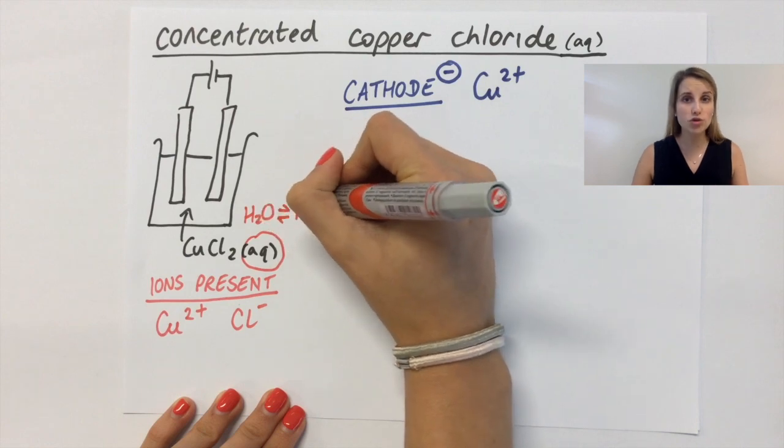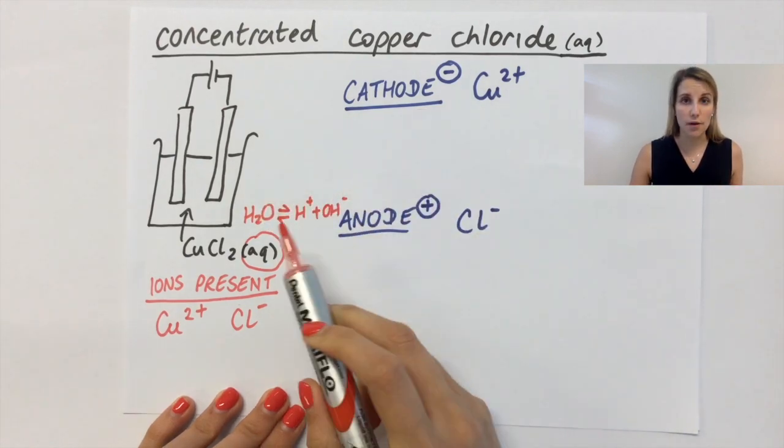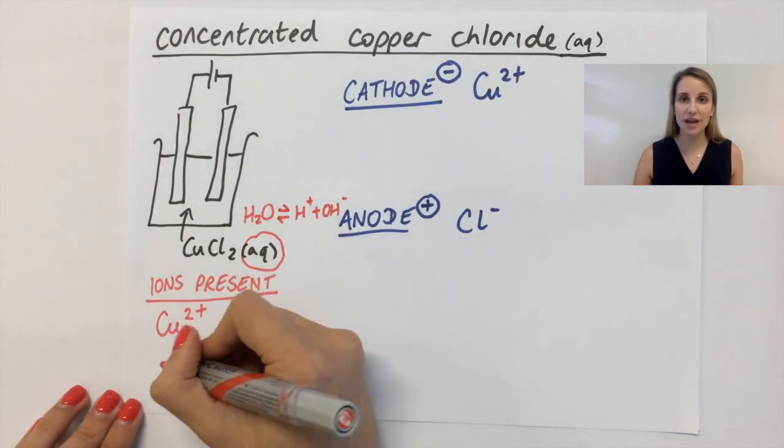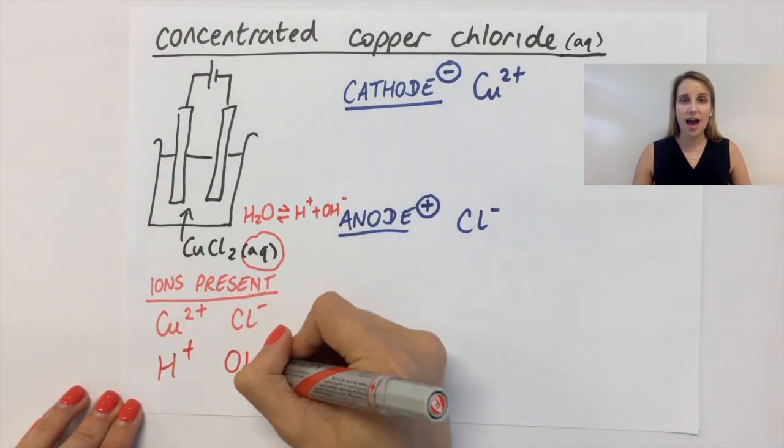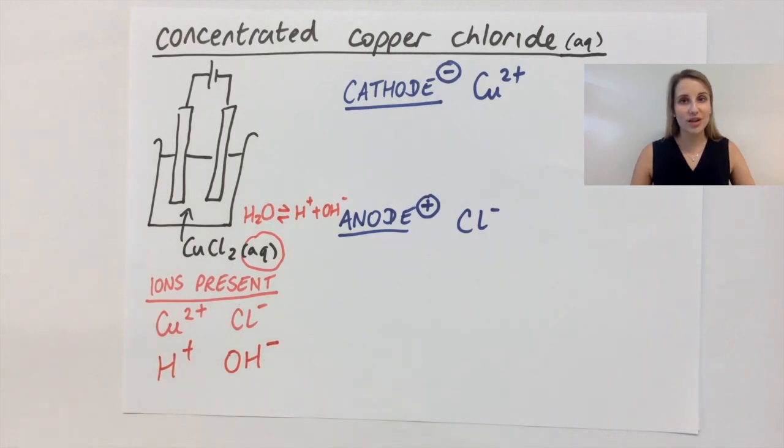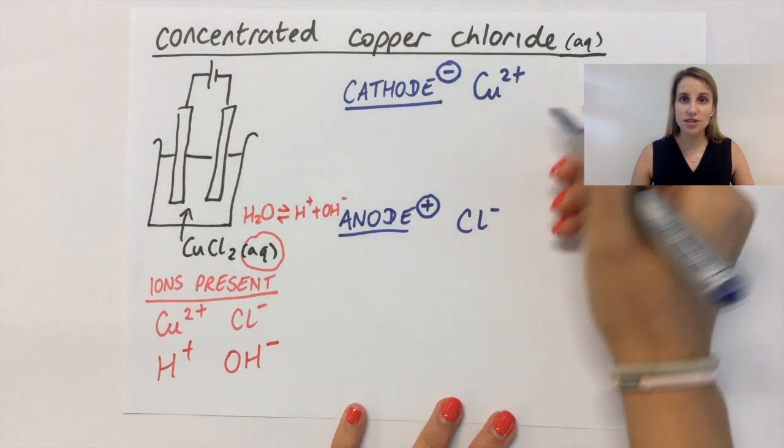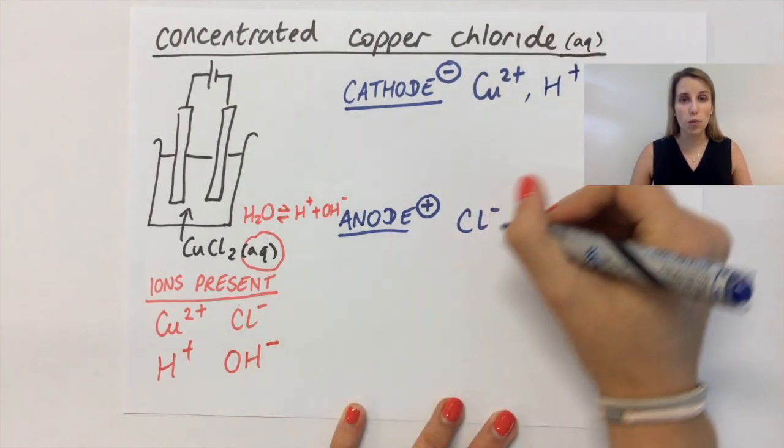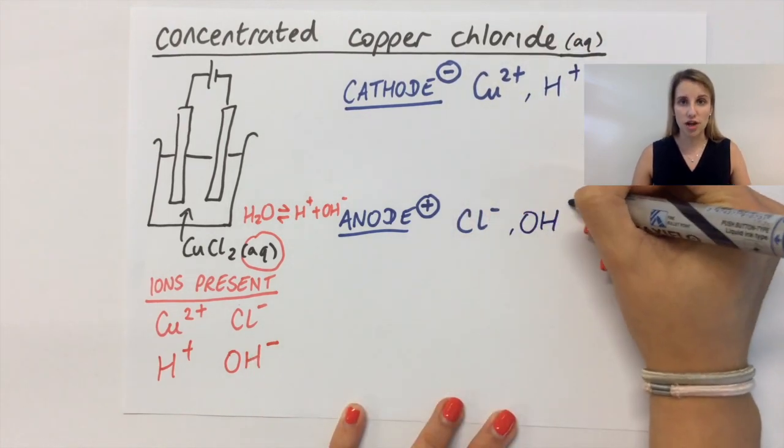Which means that I've also got these ions present. So as well as the Cu2+, the H+ will also get attracted to the cathode, and the OH- will also get attracted to the anode. So this video is basically about how you make the decision over what gets discharged at which electrode.